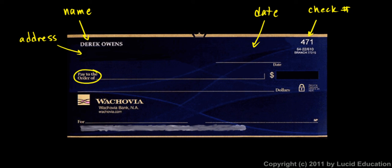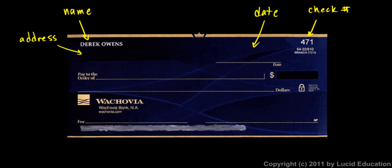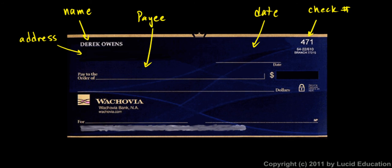This place here where it says 'pay to the order of' — on that line, you write who you're writing the check to. If you are writing a check, you're writing it to someone, and this is basically a little note that tells the bank to take money from your account and give it to them. So it's pay to the order of that person. They call that person the payee — the person who the check is being written to. The money will be paid to that person, the payee.